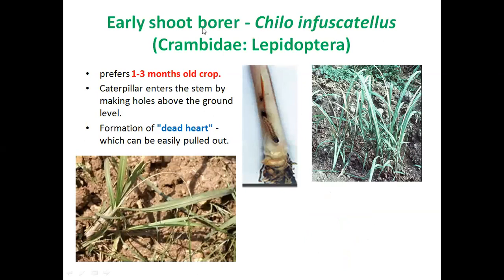The first borer is early shoot borer, Chilo infuscatellus. As the name indicates, this borer attacks the early stage of the crop, and is favored by high temperature and low humidity. It prefers to attack one to three months old crop. The caterpillar makes boreholes into the base of the stem and enters inside, disturbing the vascular bundles — especially xylem and phloem — completely stopping water and nutrient translocation to the central shoot. You can then find dead heart or drying of the central shoot, which can be easily pulled out. That is one of the important symptoms of Chilo infuscatellus.